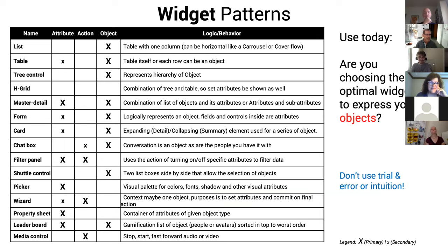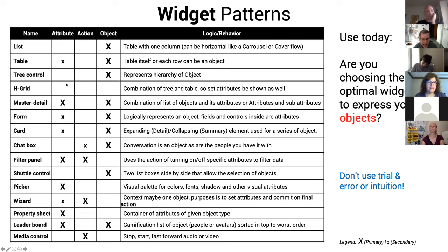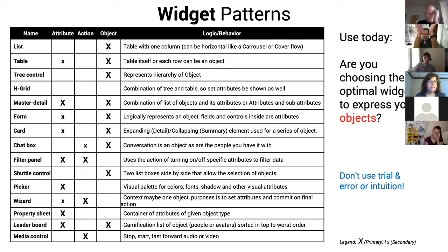Let's talk about widgets. Here are the common widgets: lists, tables, tree controls, forms, cards, property sheets, leaderboards if you're into gaming. Same issue — these patterns were designed by their inventors generally to either represent an attribute, an object, or an action. In this case, wipe out 50% of the X's in your design language to be hyper consistent. Don't do trial and error — they all need to reflect the grammar going up the pyramid.